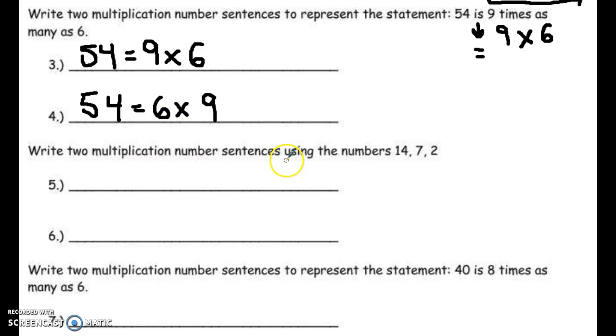Two multiplication number sentences using 14, 7, and 2. I would even accept 14 is 7 times 2 or 14 is 2 times 7. Some students like to put 14 is 7 times 2 or 7 times 2 is 14.